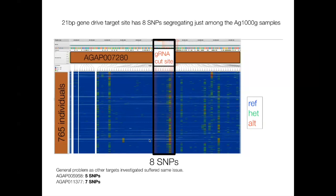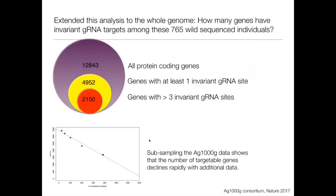Just within that 21-mer, we can see there were eight segregating variants, some at high frequency. This means resistance is already out there in the population to gene drive at this particular target site. Having some understanding of the variation that's out there will really help prioritize target sites for gene drive approaches.